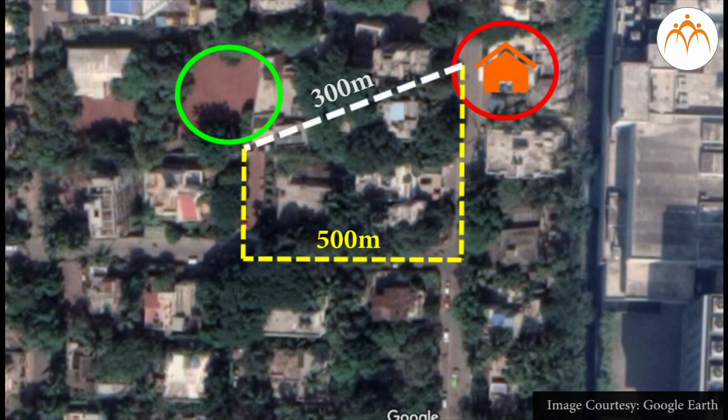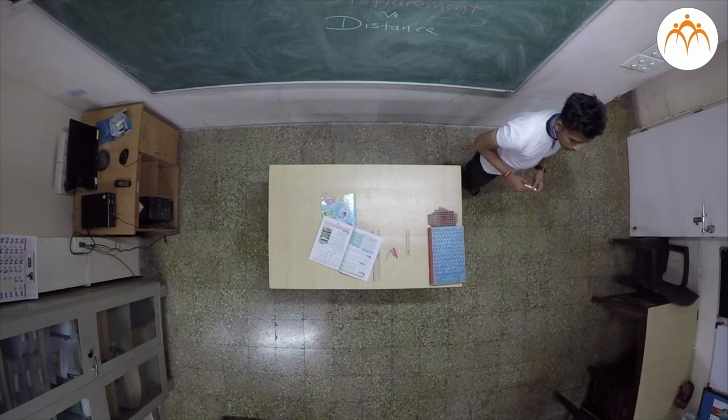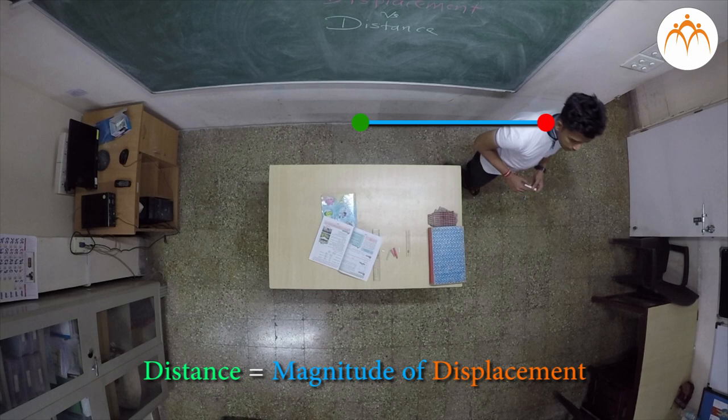Distance and displacement are different quantities, but they are related. If you take the first example of the walk around a table, it should be apparent that sometimes the distance is the same as the magnitude of the displacement.